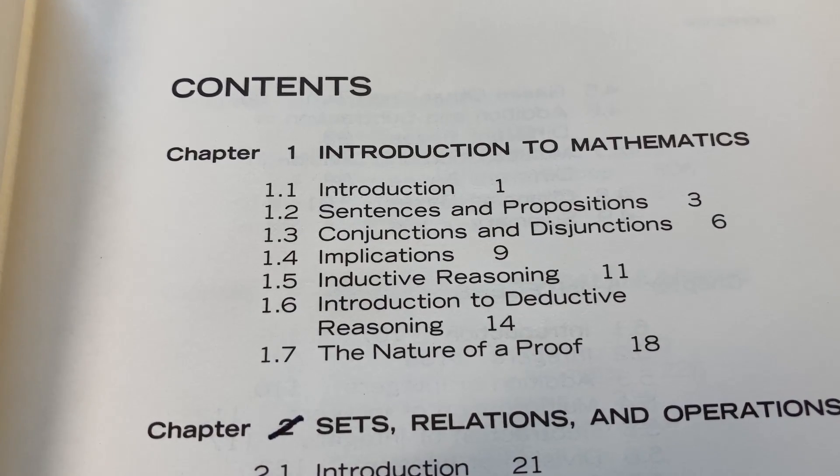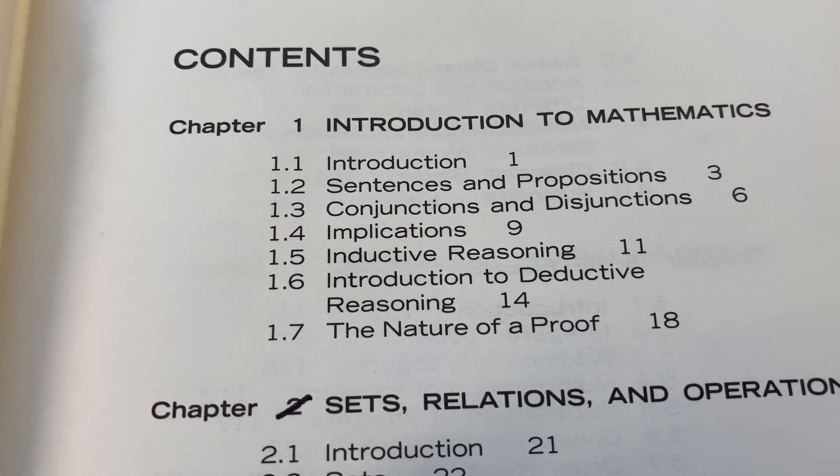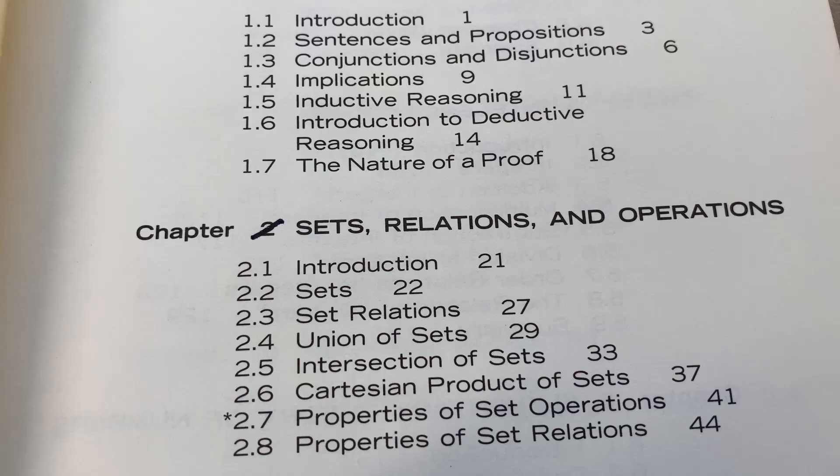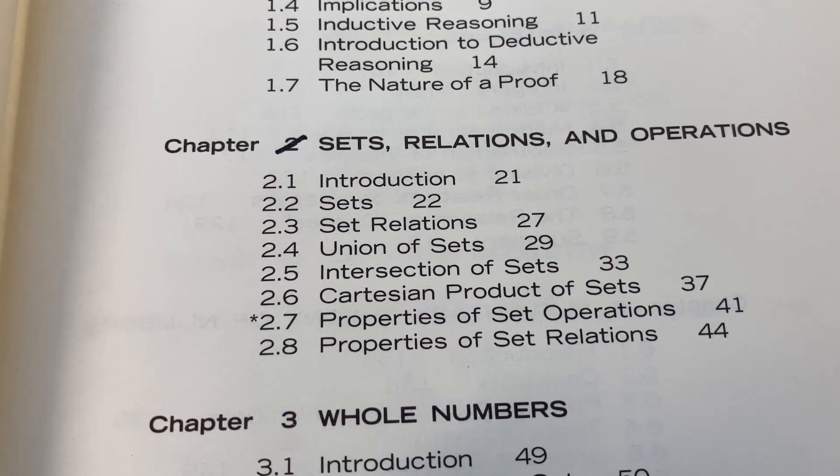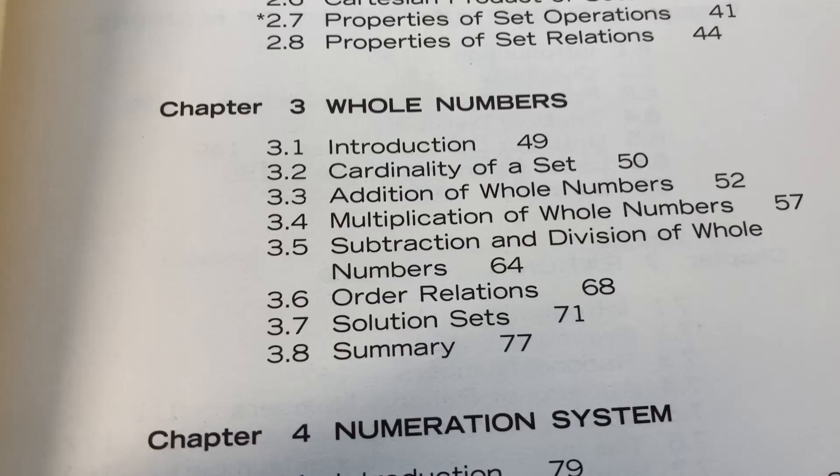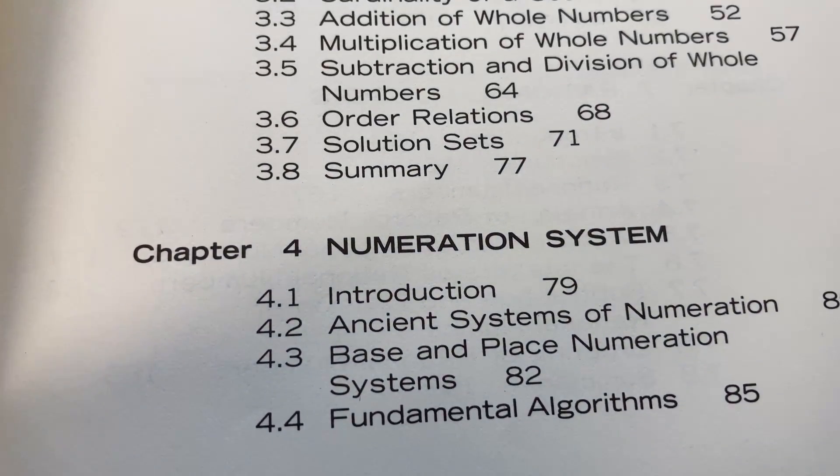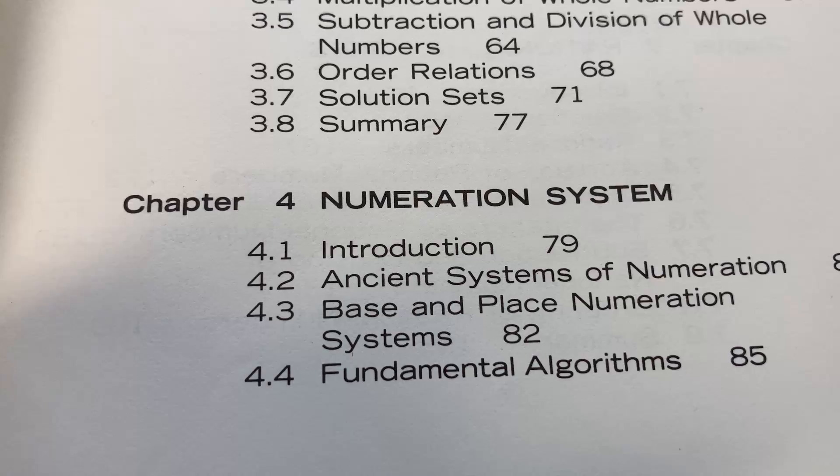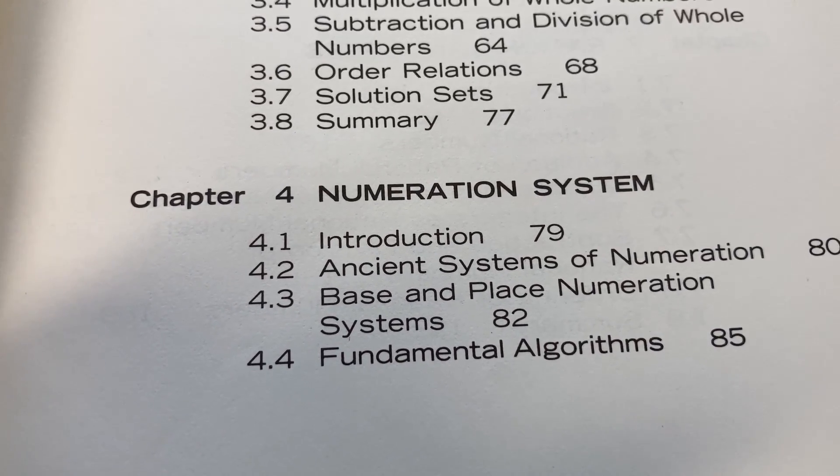Here's a look at the contents. It starts with an introduction to mathematics, so it discusses a little bit of logic. Then it goes into sets, relations, and operations. Then whole numbers, and then numeration systems, ancient systems of numeration. These are things that you normally wouldn't find in a basic algebra book.